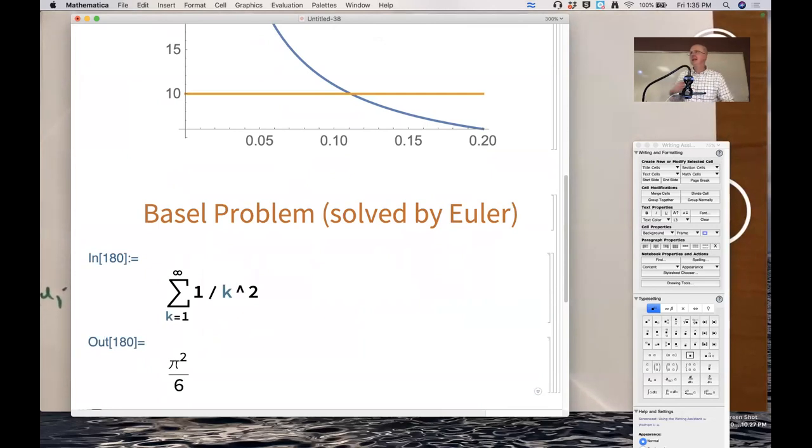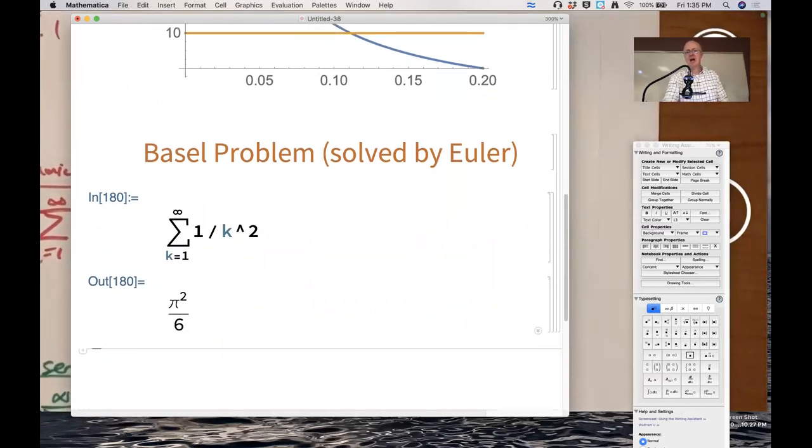Newton couldn't do it. Leibniz couldn't do it. The Bernoulli brothers couldn't do it. It took Euler to do it, to figure out that was pi squared over 6. And that was a shocking thing. Nobody expected pi to be involved.